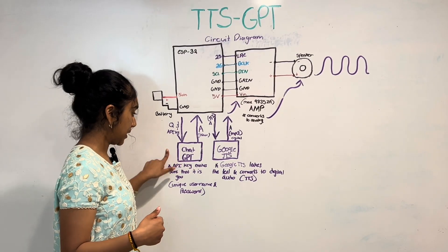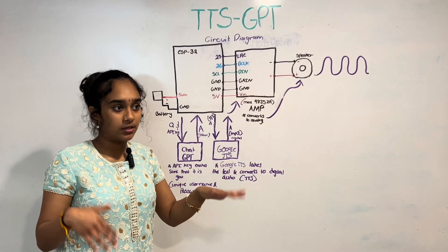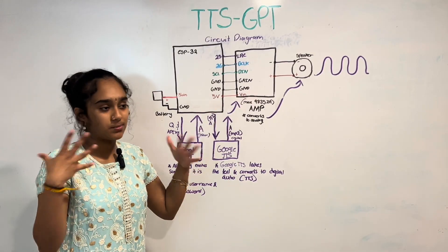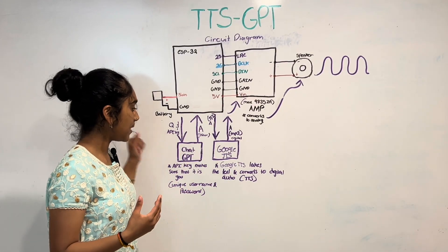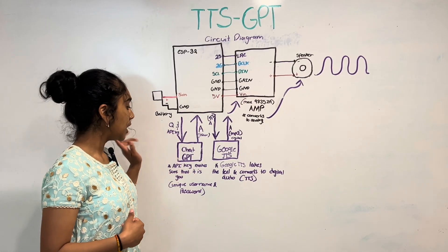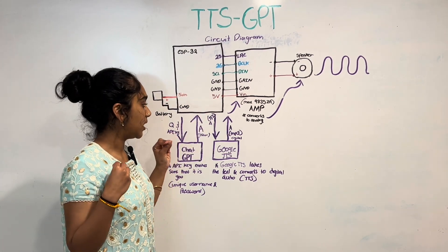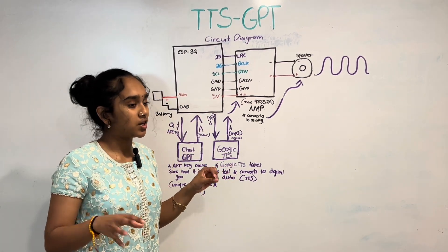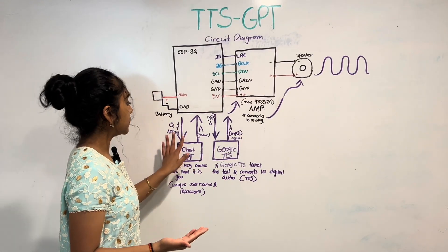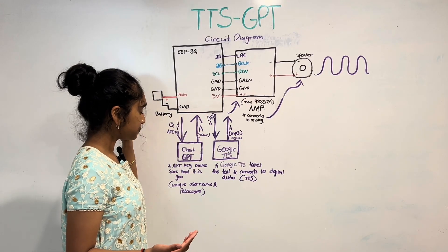So when we type in the question, the ESP32 sends the question and the API key to ChatGPT. Obviously when you type a question into ChatGPT it gives you an answer. After the ESP32 sends the question and the API key, ChatGPT sends the answer back in JSON format — in text. It's not in speech yet, it's still in text, but that's not our final result.